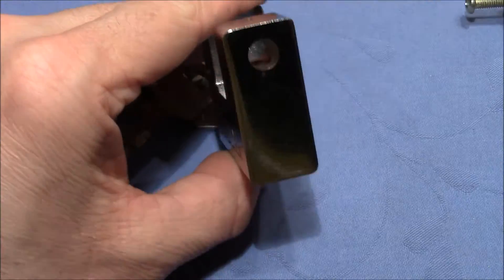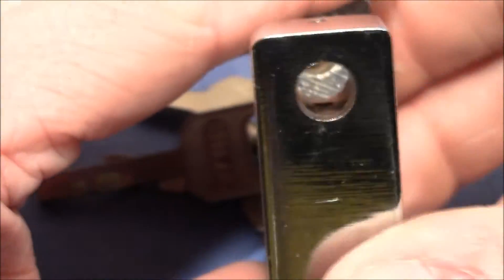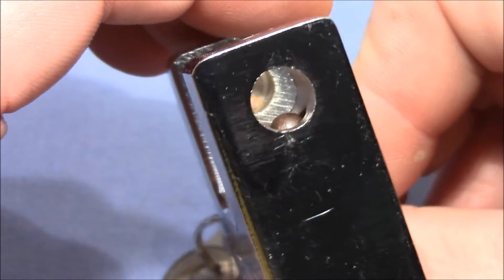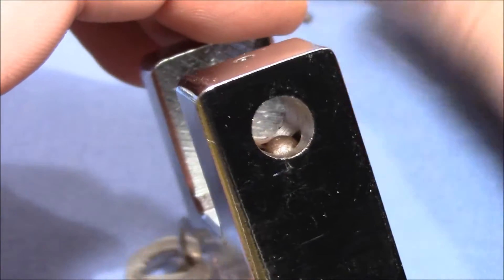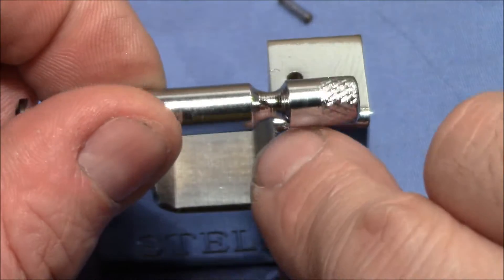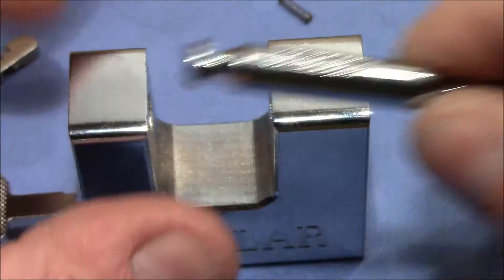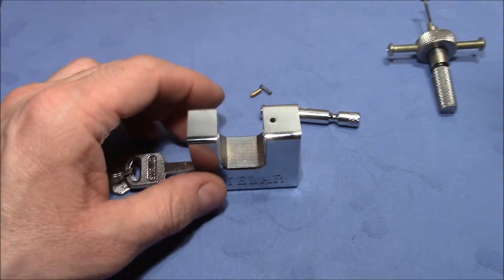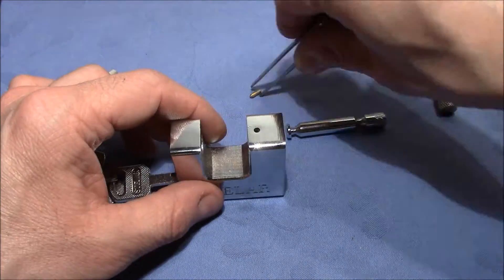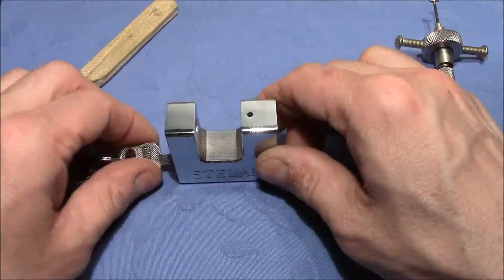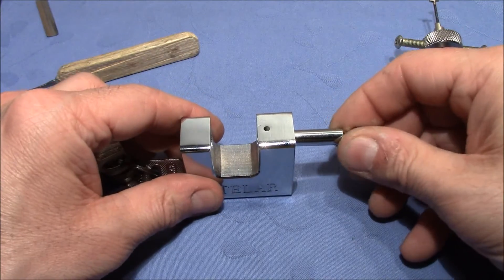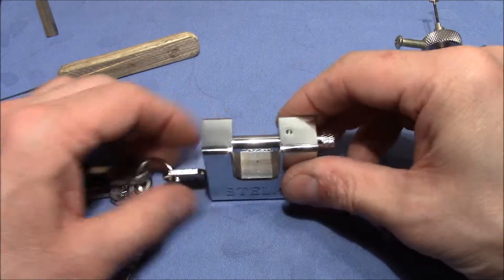Currently the lock is in the open state like so. When I lock it up, then the ball bearing comes out and prevents the bolt from being retracted by coming into this groove here. Let me quickly reassemble the lock and we will continue with the exploration. And we are back in business, works just like before.